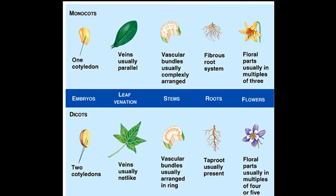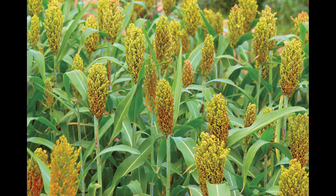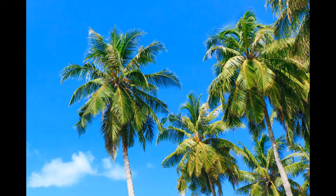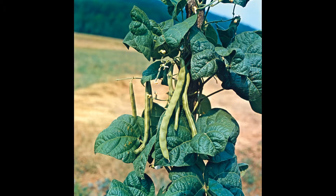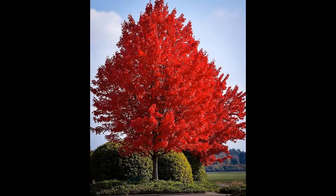Examples of monocotyledons are grasses, grain plants, and palm trees. Examples of dicotyledons are beans, roses, and maple trees.